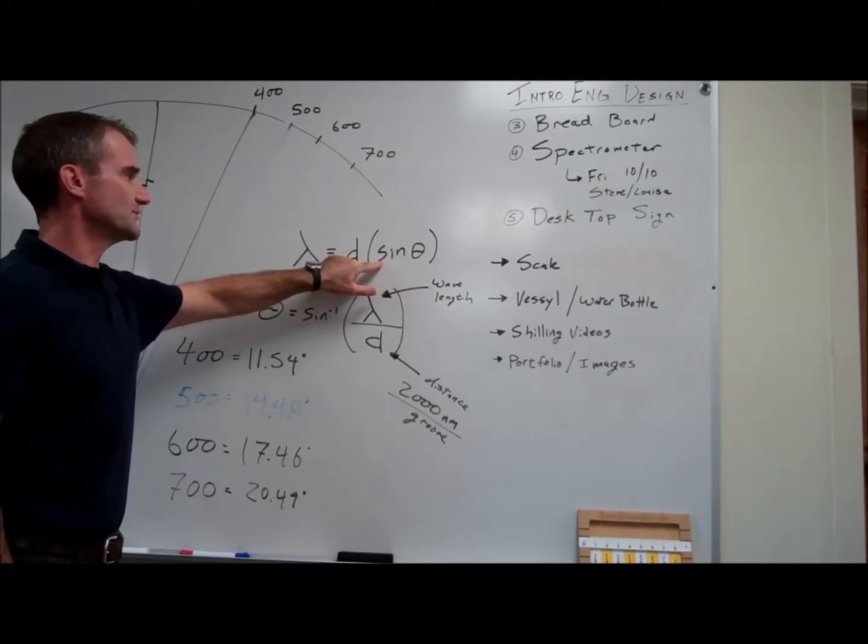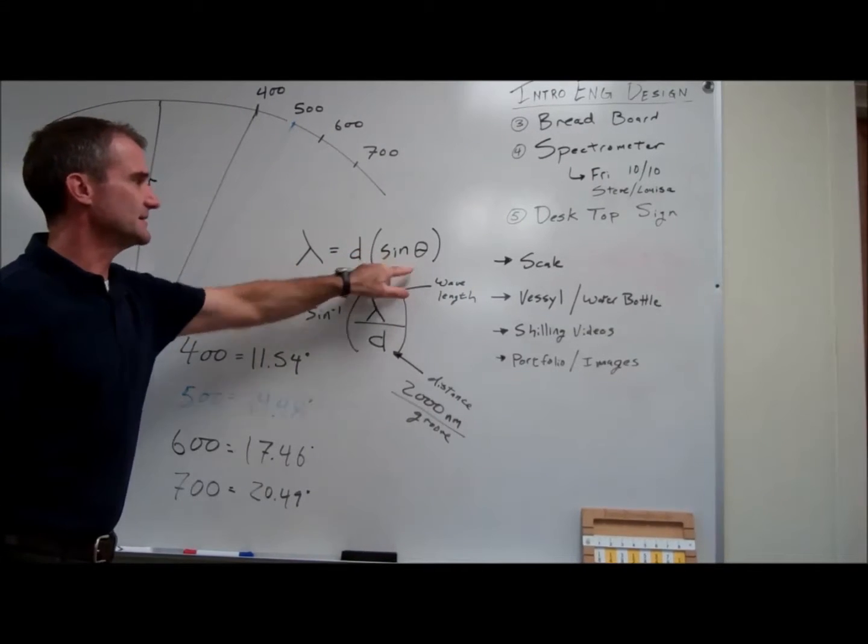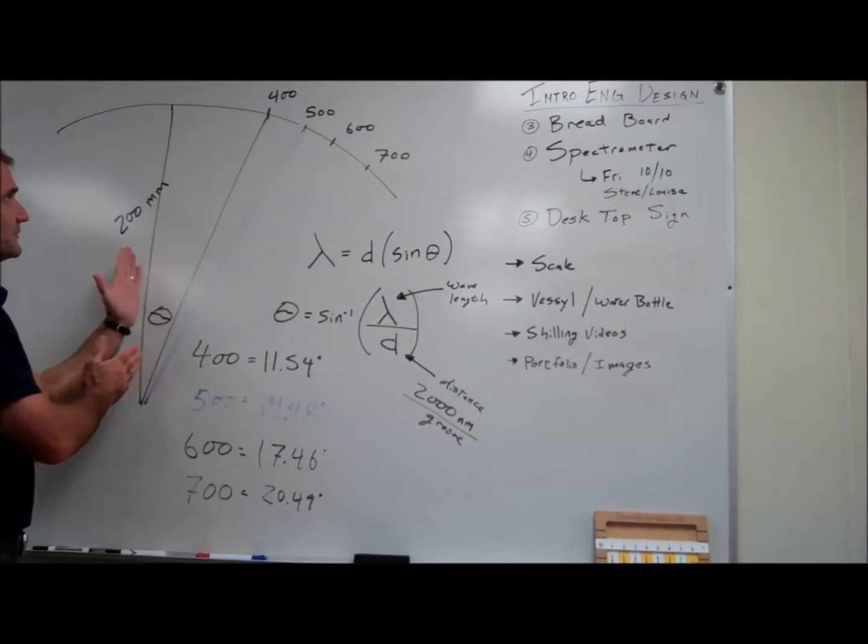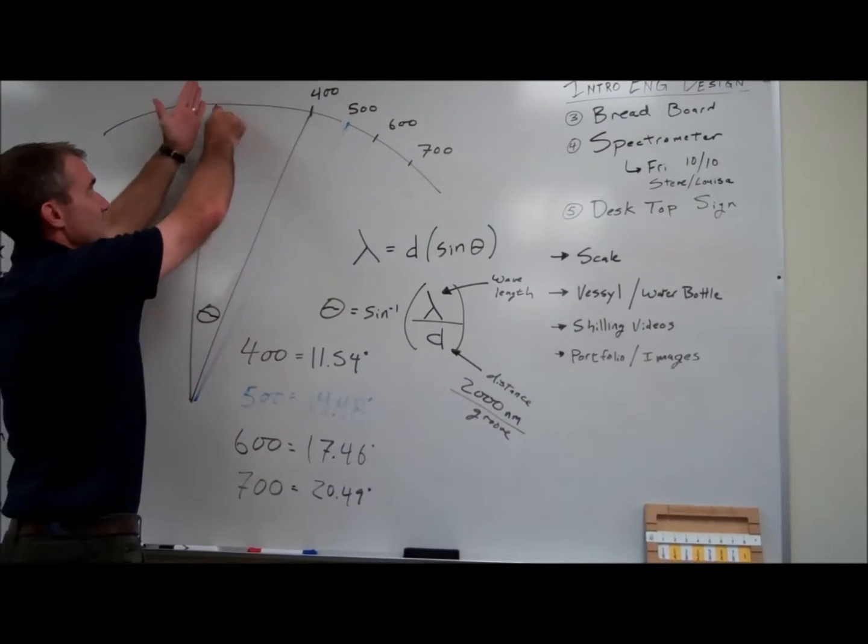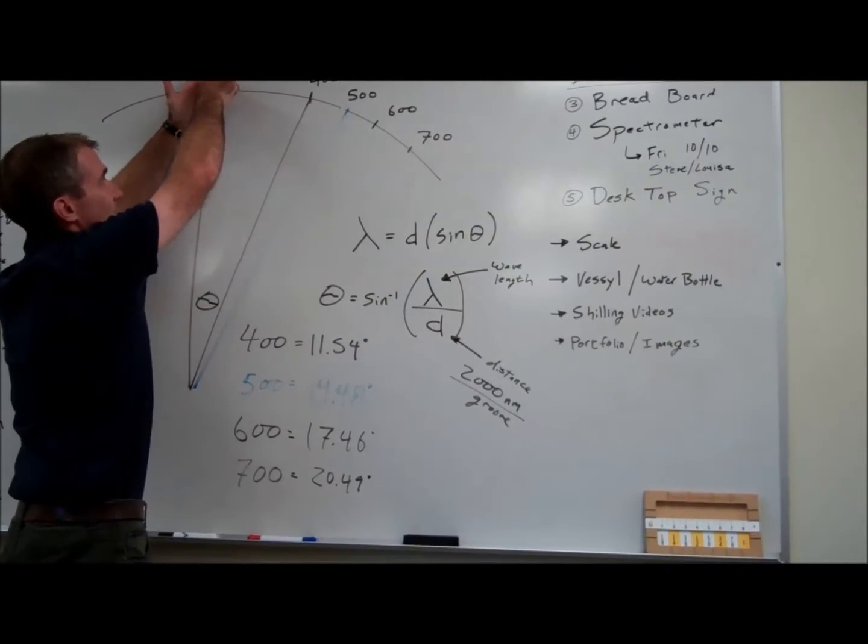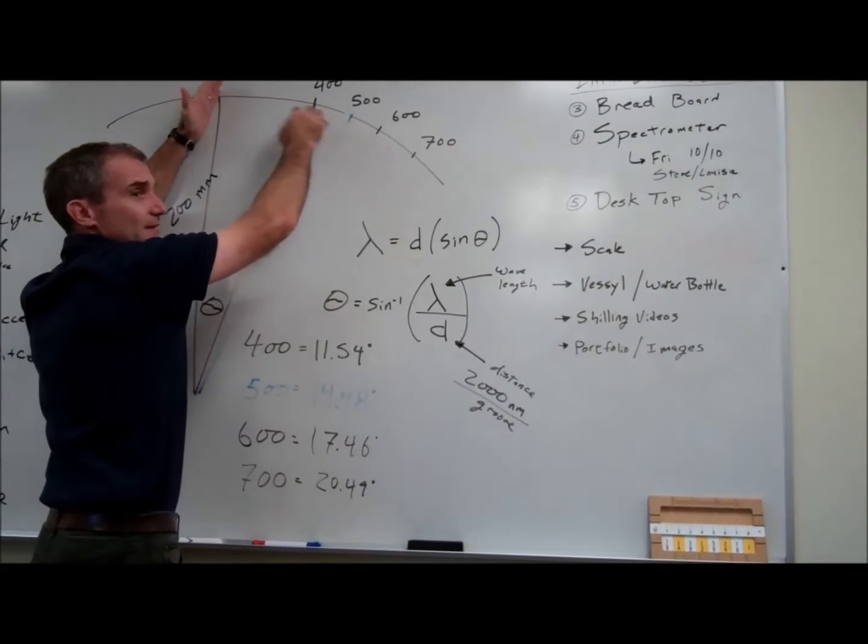Sine is a trig function for the ratio of opposite over hypotenuse, and theta is the angle between where that light comes in and where it bounces out. If I can figure out what that angle is, then I can figure out that calibration between where the light comes in and all of my different light bands.